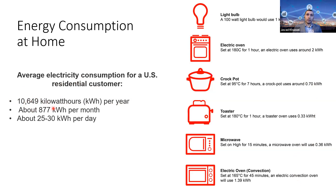Looking at electricity consumption at home: a 100-watt light bulb uses one kilowatt-hour in 10 hours. So if you leave a 100-watt light on for 10 hours, you consume one kilowatt-hour of electricity.